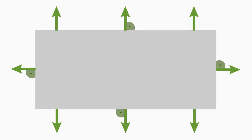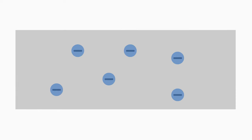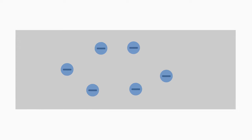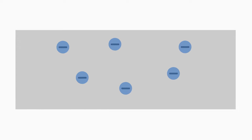Let us consider a charged conductor such as an electrically charged metal body. The charged conductor produces an electric field that is always perpendicular to its surface. Why? The electric charges, namely the electrons, inside the conductor can move freely.